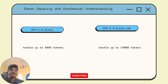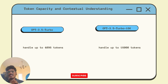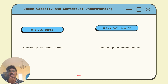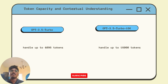Let's start with the cornerstone of these models: token capacity. Tokens are chunks of text that the model processes. GPT-3.5 Turbo can handle up to 4096 tokens, while GPT-3.5 Turbo 16k can handle up to 16,000 tokens.